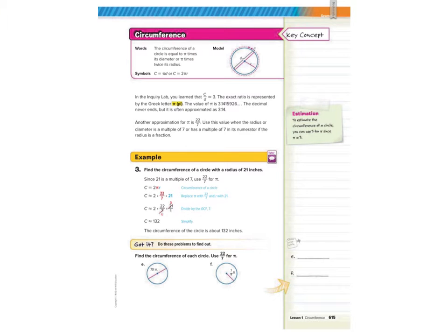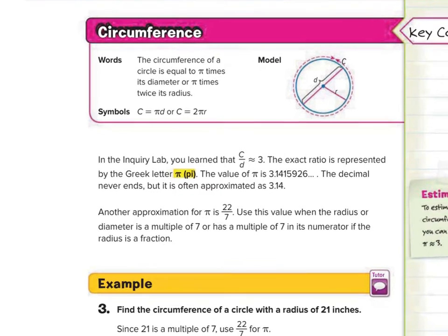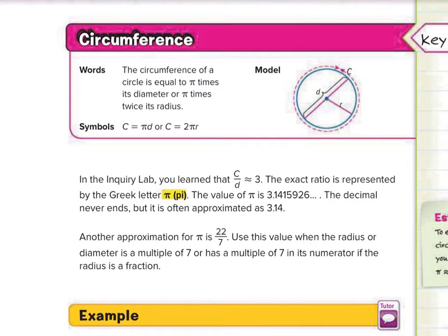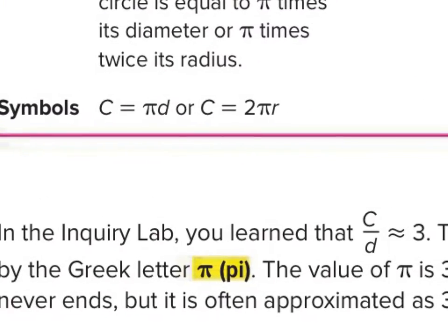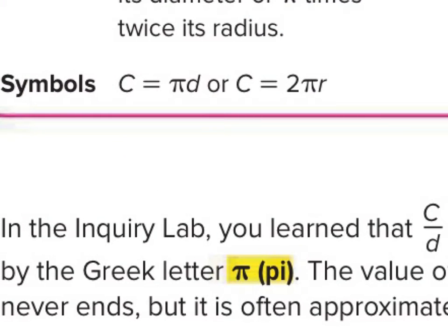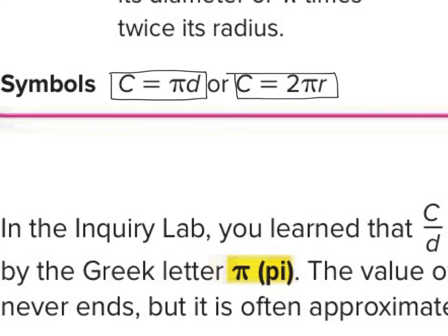Moving on to page 615, now we're going to talk about finding the circumference. The circumference of a circle equals pi times its diameter, or pi times twice its radius. There are actually two formulas: one uses D for diameter, the other uses R for radius. If they tell us the diameter, we use the first formula; if they tell us the radius, we use the second. Formula 1: C equals pi times D. Formula 2: C equals 2 times pi times R.